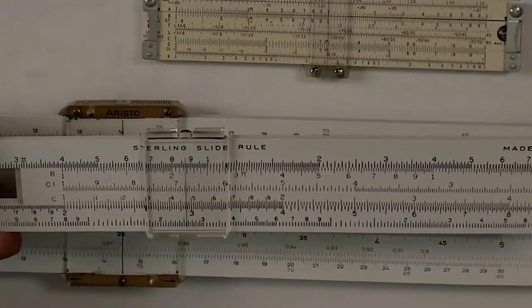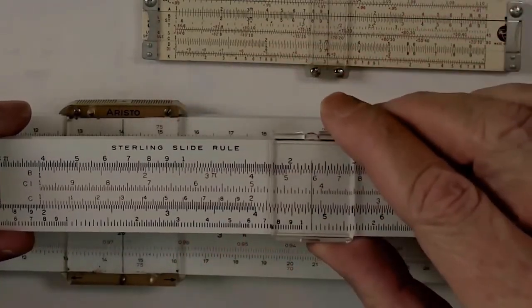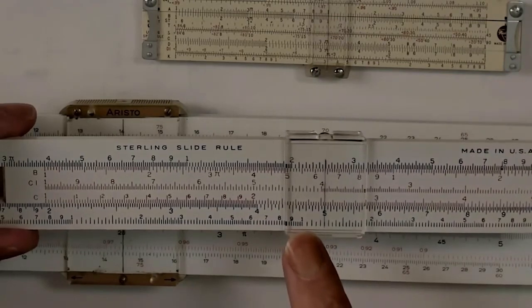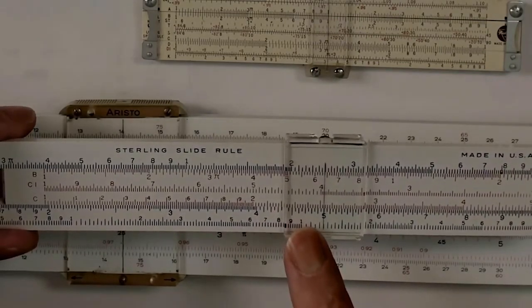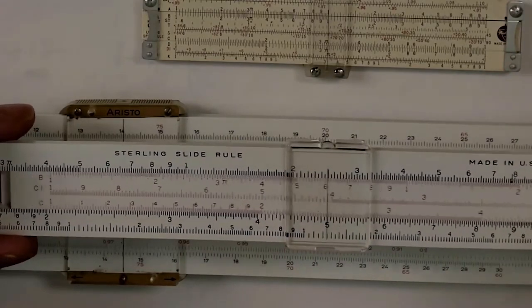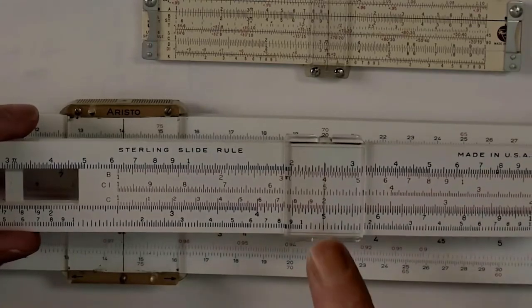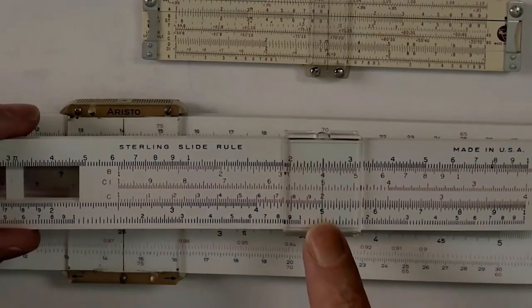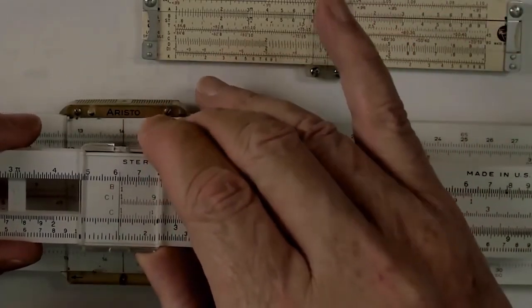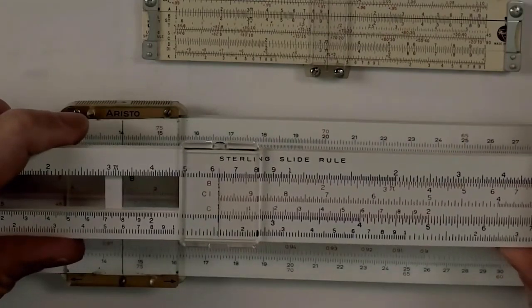Division is exactly the opposite. What we'll do with division is take the number that we are dividing something into and put that on the bottom scale, or the scale on the stator, in this case, the d-scale. And then what we're doing to it, we will put directly above it. So, for example, in this case, we're dividing 5 by 2. Then we read back to the index, which is the 1 on the c-scale, and we get our answer, which is 2 1⁄2.